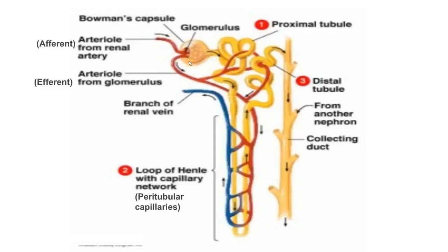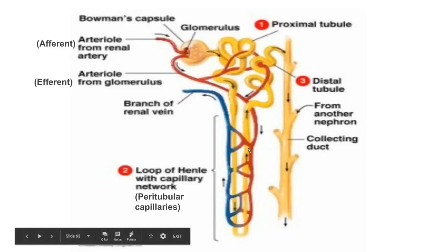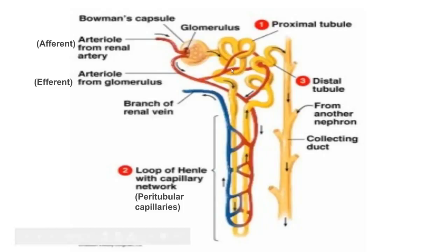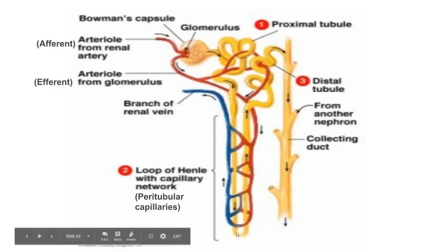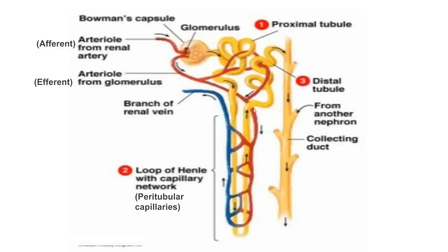Here is the diagrammatic representation of the nephron. This cup-shaped structure is the Bowman's capsule, and inside it is the ball of capillaries known as the glomerulus. Blood enters through one arteriole and leaves through the other. You can see the peritubular capillaries around the loop of Henle, the proximal convoluted tubule, the U-shaped loop of Henle, the distal convoluted tubule, and finally the collecting tubule or collecting duct.